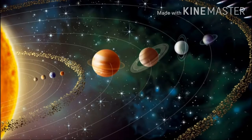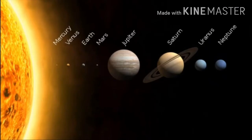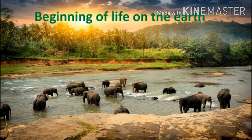We have all studied about the planets in our previous lesson in EVS 1. Let us revise the names of all these planets: Mercury, Venus, Earth, Mars, Jupiter, Saturn, Uranus, and Neptune. We have studied that these planets revolve around the sun and rotate around themselves. We also know that among these planets, only Earth is the planet where life exists.